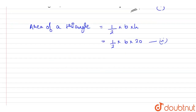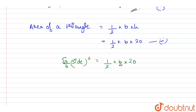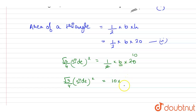After equating them, root 3 by 4 into side squared equals 1 by 2 into base into 20. Since base is also a side of the equilateral triangle, we can write root 3 by 4 times side squared equals 10 times side, because 20 divided by 2 is 10 and all sides of an equilateral triangle are equal.